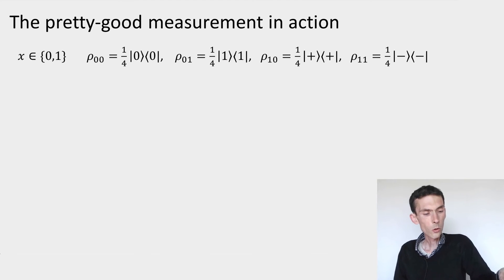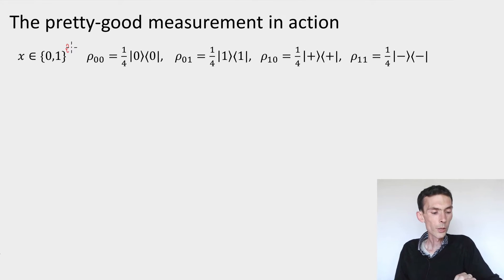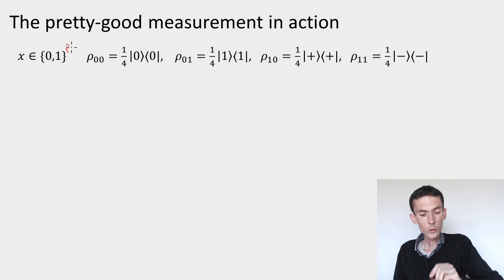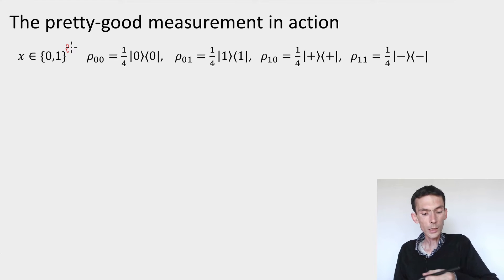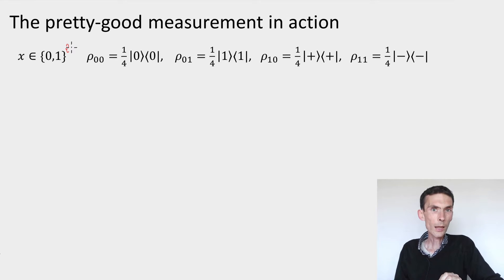Let's work out what this pretty good measurement looks like on a simple example. Here's an encoding of strings x that take two bits. There are four possible x's, and that's a possible arbitrary encoding. Our goal is, given one of these states ρ_x, to identify the string x by making the best measurement possible.